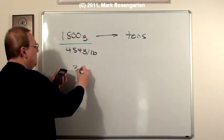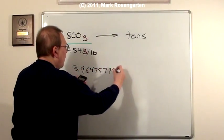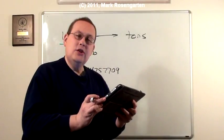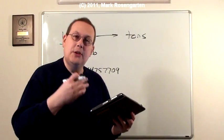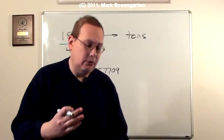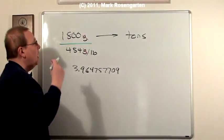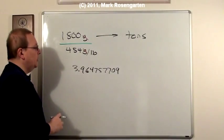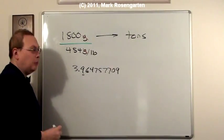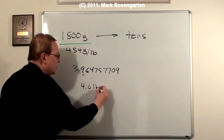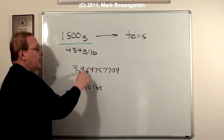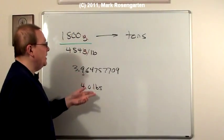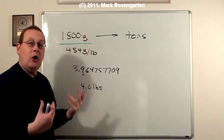Now that comes out to 3.964757709 pounds. Of course, we can't make use of all these numbers. It's 1800 grams, and there's no decimal point to indicate significant figures. So I'm going to assume that you want two significant figures in your answer. If you have two significant figures to start with, after you divide by your conversion factor, you'll have two significant figures when you're done. 4.0 pounds, because this six bumps 3.9 up to 4.0. Now you're halfway there. I converted grams into pounds by dividing by the number of grams there are in a pound.